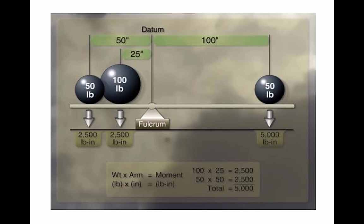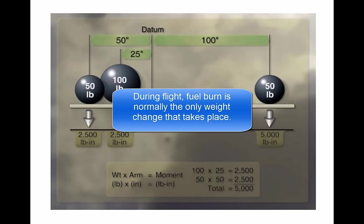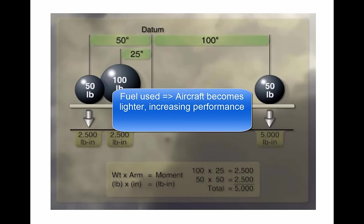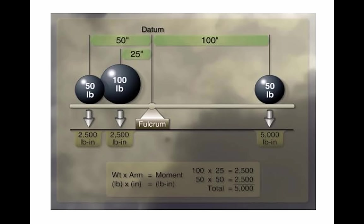The operating weight of an aircraft can be changed by simply altering the fuel load. Gasoline has considerable weight—6 pounds per gallon—and 30 gallons of fuel may weigh more than one passenger. If a pilot lowers airplane weight by reducing fuel, the resulting decrease in range must be taken into consideration during flight planning. During flight, fuel burn is normally the only weight change that takes place; as fuel is used, an aircraft becomes lighter and performance is improved. Changes of fixed equipment, installation of extra radios or instruments, as well as repairs or modifications may also affect the weight of an aircraft.